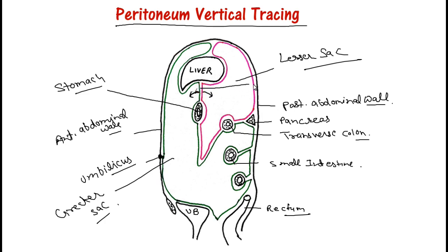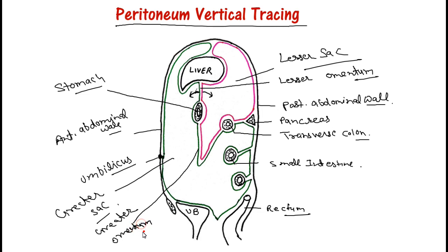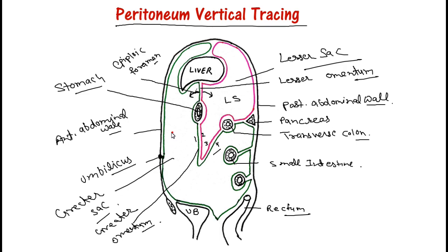The portion between the liver and the stomach is known as the lesser omentum, and extending from the stomach this is known as the greater omentum. The greater omentum has four layers: first, second, third, and fourth layer. This opening is known as the epiploic foramen — it is a communication between the greater sac and the lesser sac.